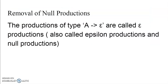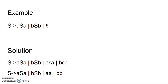Next we move on to removal of null production. What do you mean by null production? The production of the type A produces epsilon is known as null production, or it is also sometimes called epsilon production. Let's take a simple example: S produces aSa | bSb | epsilon.